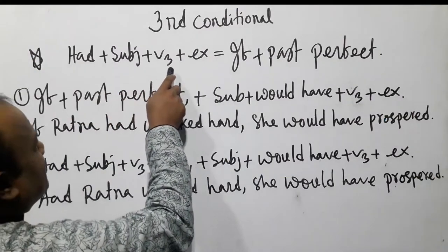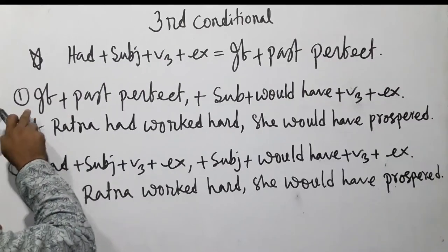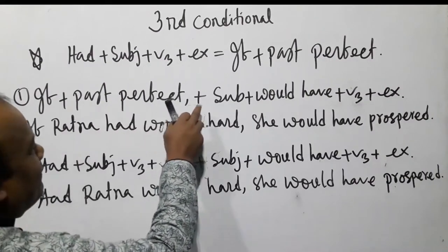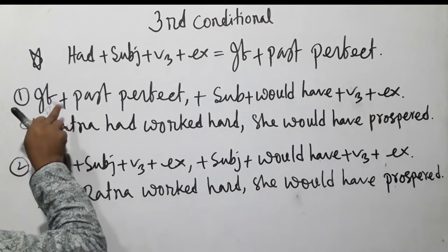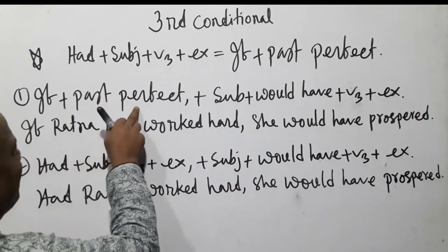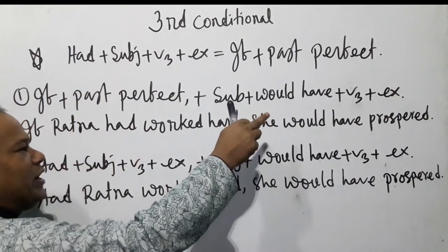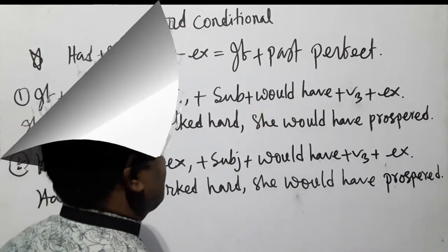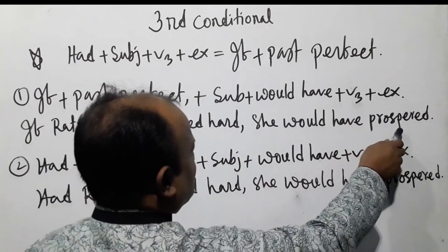Had + subject + v3 + extension equals if + past perfect. Number one: if + past perfect, subject + would have + v3 + extension. Or, if subject + would have + v3 + extension. If Ratna had worked hard, she would have prospered.